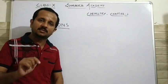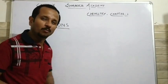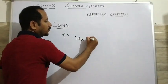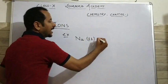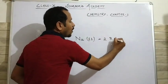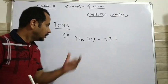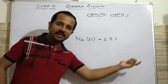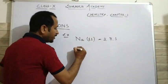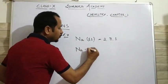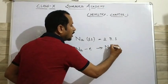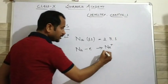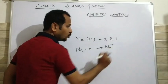Now the question arises, how are ions formed? We will take an example: sodium. Atomic number of sodium is 11 and its electronic configuration is 2, 8, 1. So we can say that it will lose one electron and form a positive ion — sodium positive ion. In this manner the positive ion of sodium is formed.